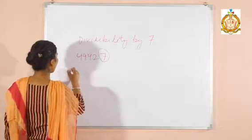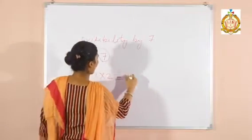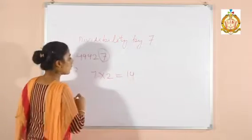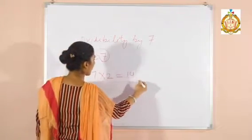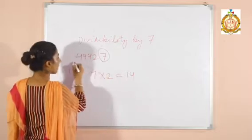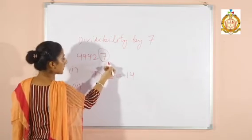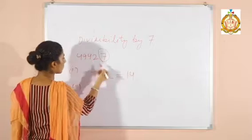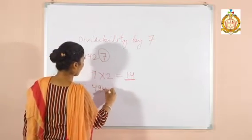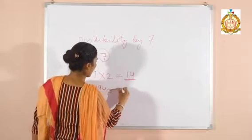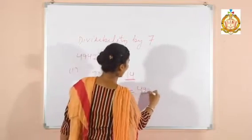First step is to double the units digit. You will get the answer 14. Next step is to subtract the answer from the remaining number without the units digit. The remaining number without the units digit is 4942. So subtract 14 from 4942. After subtraction, you will get the answer 4928.